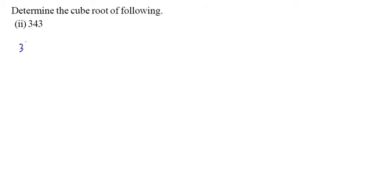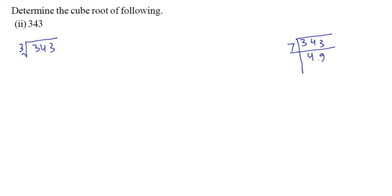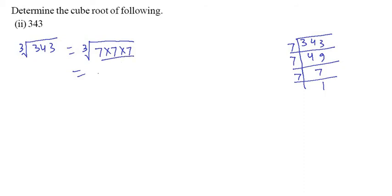Let us see the second question: cube root of 343. Do the prime factorization of 343. It is divided by 7: 7 × 4 = 28, 7 × 9 = 63. Once again by 7: 7 × 7 = 49. Further divided by 7: 7 × 1 = 7. So we get cube root of 7 × 7 × 7. There is one triplet, so we can write only one — that is 7. And 7 is the answer of cube root of 343.